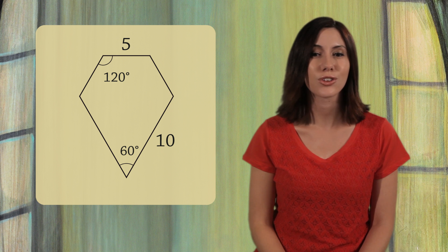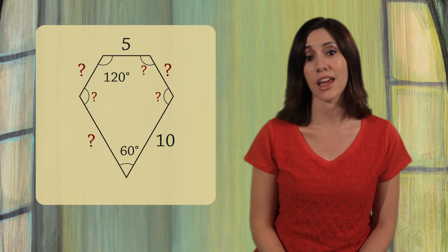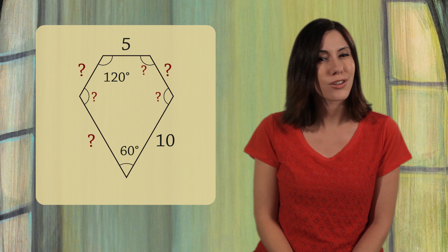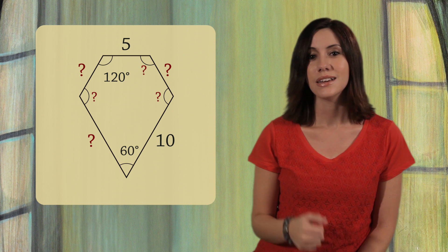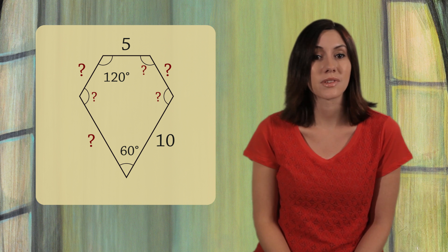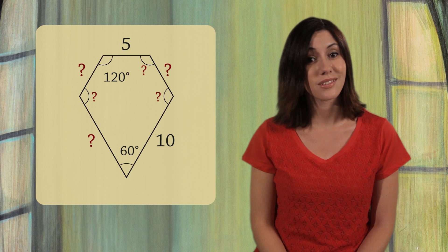One of the goals in geometry is to learn how to find the unknown sides and angles. Before you tackle complex shapes like this one, it's best to start with simple shapes. And one of the simplest shapes is the triangle.